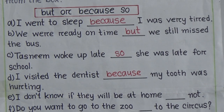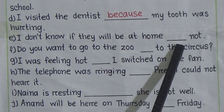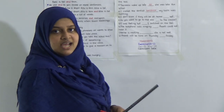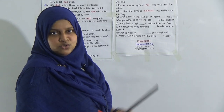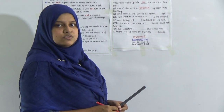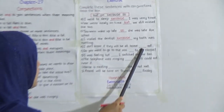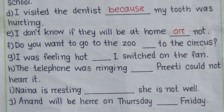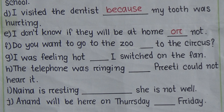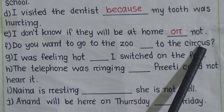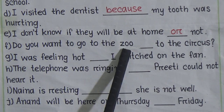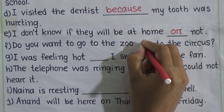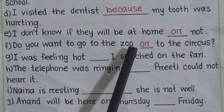Number e: 'I don't know if they will be at home ___ not.' You don't know, you are not sure - so we use 'or': 'I don't know if they will be at home or not.' Number f: 'Do you want to go to the zoo ___ to the circus?' We are comparing two choices, so we use 'or': 'Do you want to go to the zoo or to the circus?'